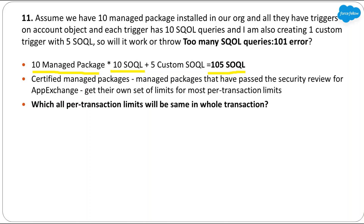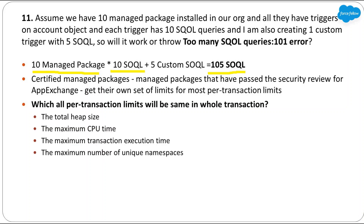A cross-question the interviewer might ask is: which per-transaction limits are shared across the entire transaction, including managed, unmanaged, and custom code? The answer is: all per-transaction limits count separately for certified managed packages except total heap size, maximum CPU time, maximum transaction execution time, and maximum number of unique namespaces. These limits are the same for the entire transaction regardless of how many certified managed packages are running, but SOQL, DML, SOSL, and other per-transaction limits will be separate.